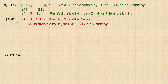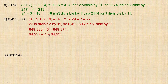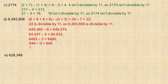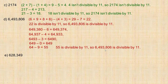Using the second method on 6,493,806: take the 6 off, subtract from 649,380 to get 649,374. Take the 4 off, subtract from 64,937 — since 37 minus 4 is 33 — giving 64,933. Take the 3 off from 6,493 to get 6,490. Drop the trailing zero to get 649, then subtract 9 from 64 to get 55. Since 55 is divisible by 11, the number is confirmed divisible by 11.